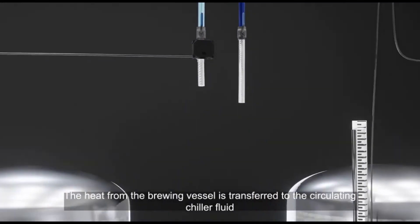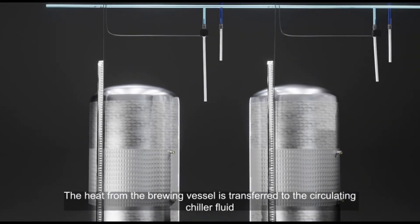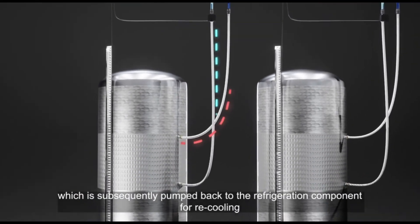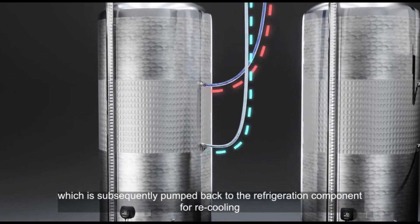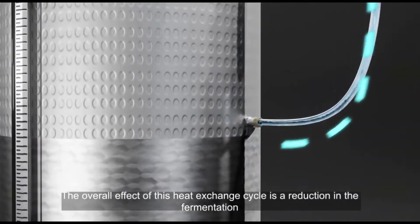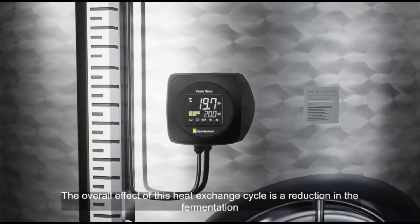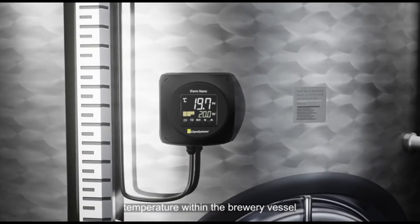The heat from the brewing vessel is transferred to the circulating chiller fluid which is subsequently pumped back to the refrigeration component for recooling. The overall effect of this heat exchange cycle is a reduction in the fermentation temperature within the brewery vessel.